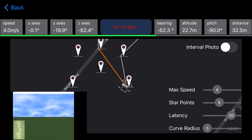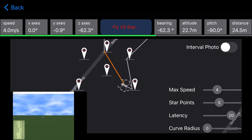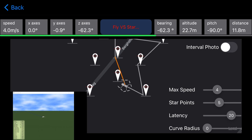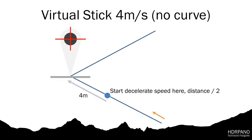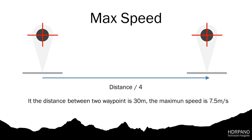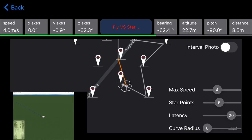This is the easiest way to add virtual stick waypoint missions. When we arrive at the waypoint, we yaw the aircraft in the new bearing direction and fly to the next waypoint. Before we arrive at the next waypoint, we decelerate the speed. If we have 4 m/s, we decelerate at 4 m/s for half the distance. The maximum speed between two waypoints is the distance divided by 4. If the speed is too high, you will overfly the waypoint.